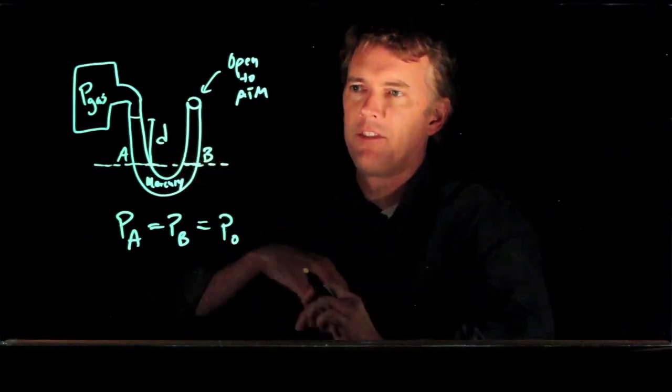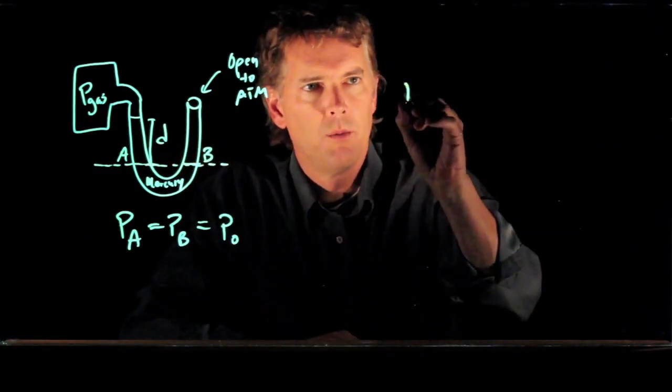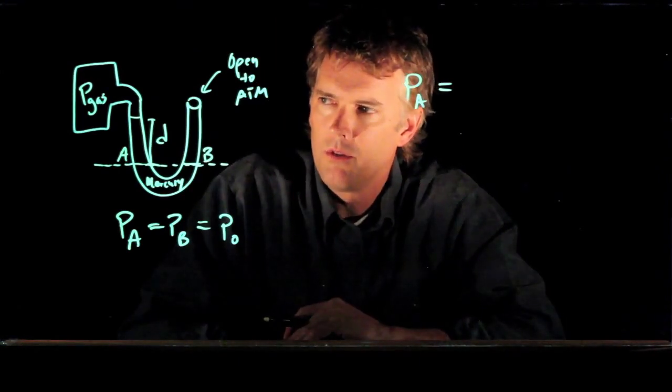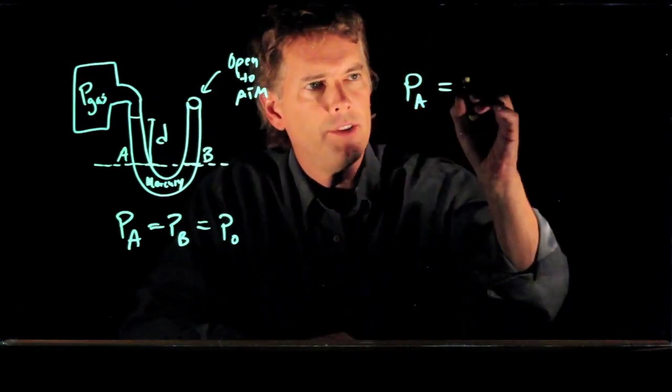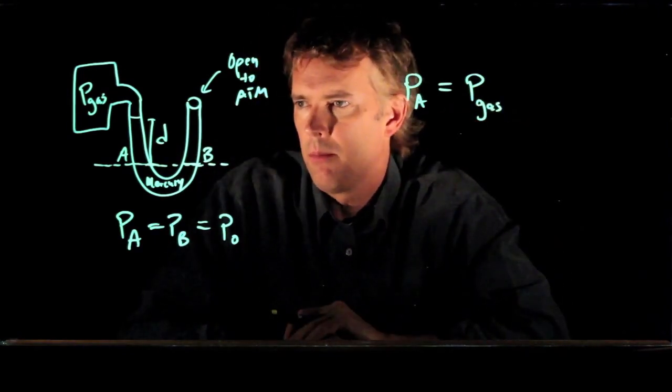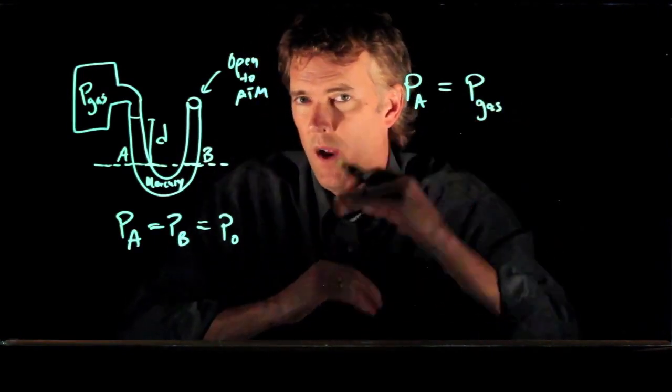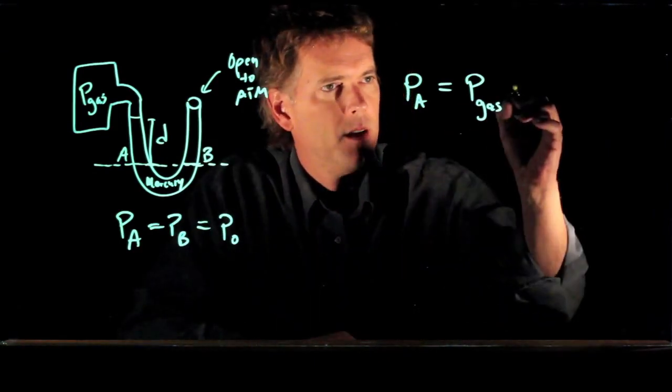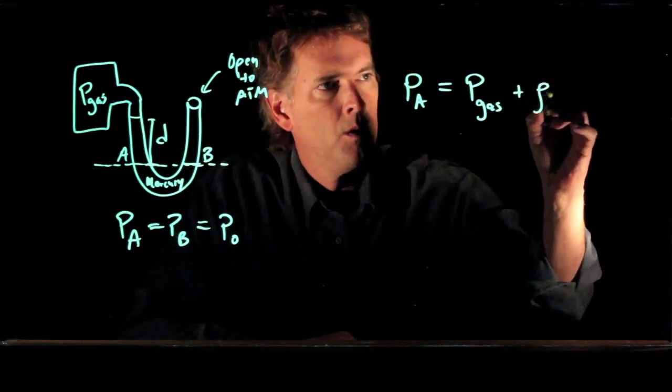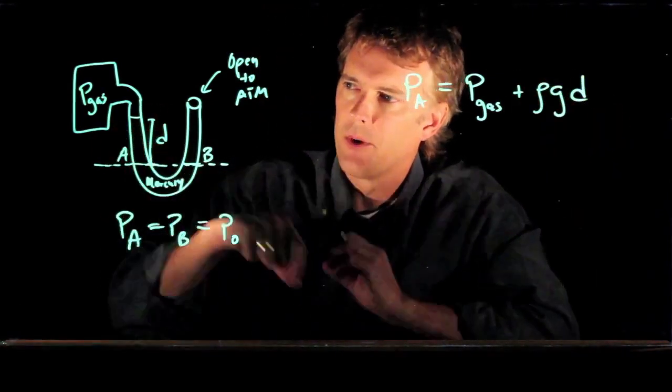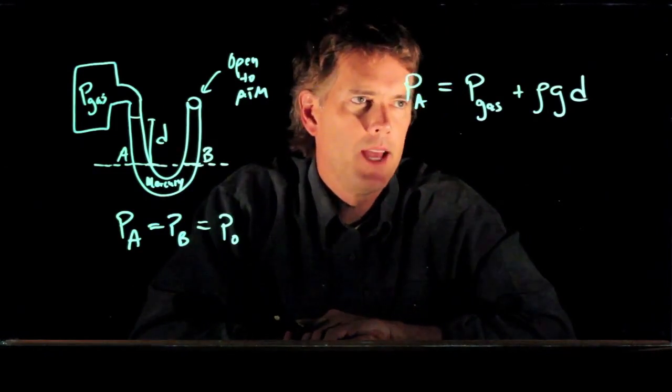So now let's think about the pressure on the left side tube. What do we know? We know that P A equals the pressure above it, which is the pressure that's in that gas chamber, plus any weight of the fluid that's above it, the pressure due to that, which is rho G D. D is the height of the mercury that is above our point A.